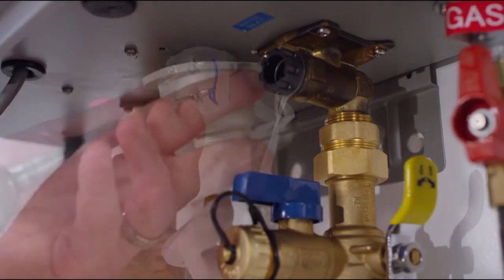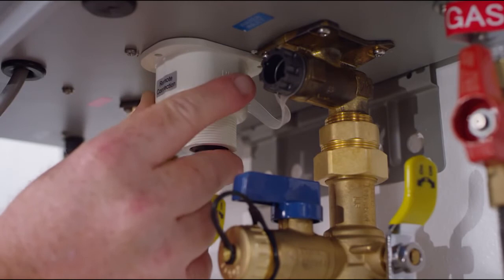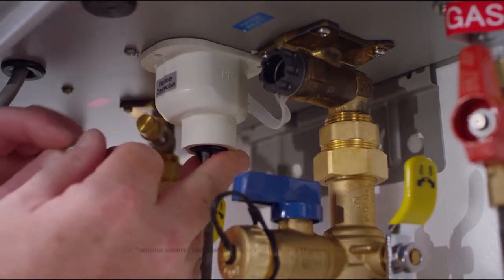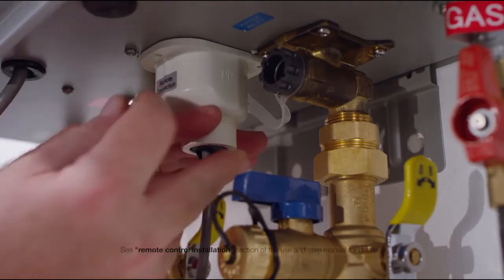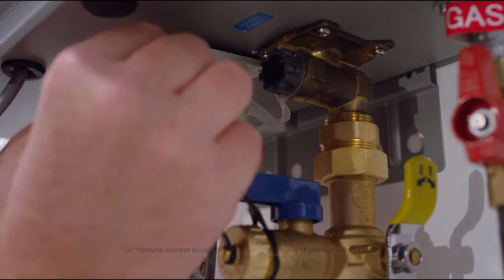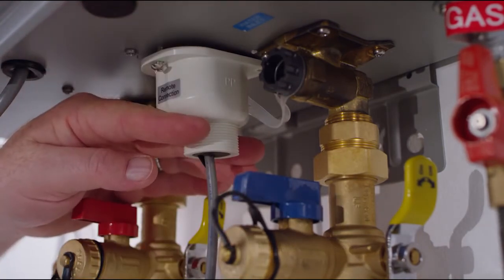Slide the cover back and pull down, then insert the wire through the rubber grommet on the bottom of the cover. Route and connect the wire leads to the screw terminals. Slide the cover up to the bottom of the water heater and reinstall the screw.